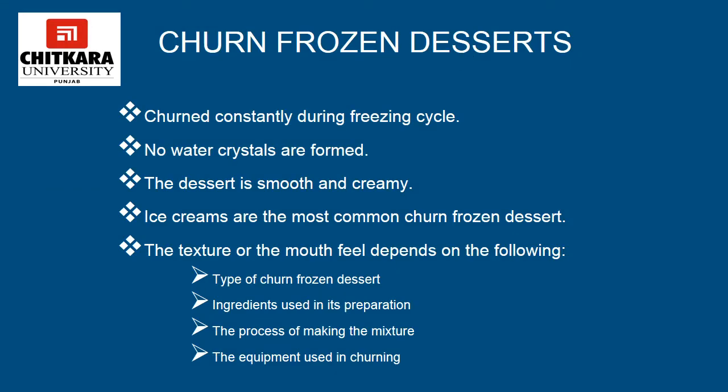Churn frozen desserts are churned constantly during the freezing cycle. The simultaneous process of churning and freezing does not allow water crystals to form, and the resulting desserts are smooth and creamy. Ice cream and sherbet are churn frozen — mixed constantly while being frozen. If they were not churned, they would freeze into solid blocks of ice. The churning keeps ice crystals small and incorporates air. The texture or mouthfeel depends on the type of churn frozen dessert, the ingredients used, the process of making the mixture, and the equipment used in churning.